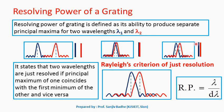The criteria for just resolution is given by Rayleigh, and it is called Rayleigh's criteria for just resolution. It states that two wavelengths lambda 1 and lambda 2 are just resolved if the principal maximum of one coincides with the first minimum of the principal maximum of the other, and vice versa.